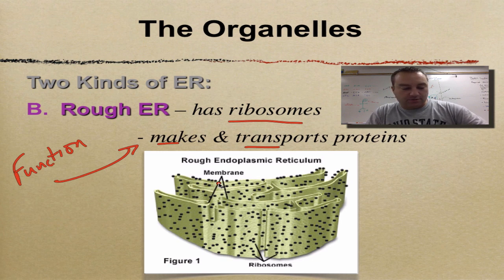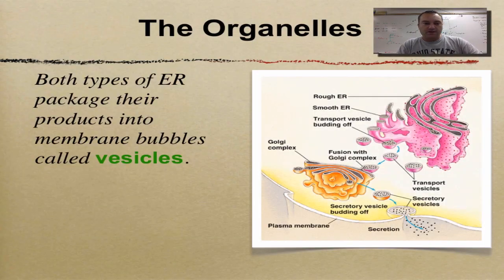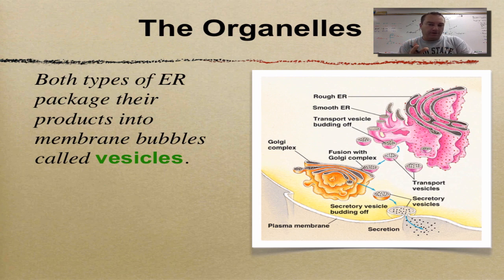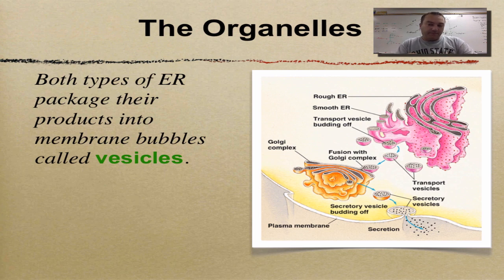The next structure is vesicles. Think of a vesicle as a box — if you're smooth ER or rough ER, whatever you're making, you put it in a shipping box and it goes out to where it needs to go. A vesicle is simply a membrane bubble that contains materials.